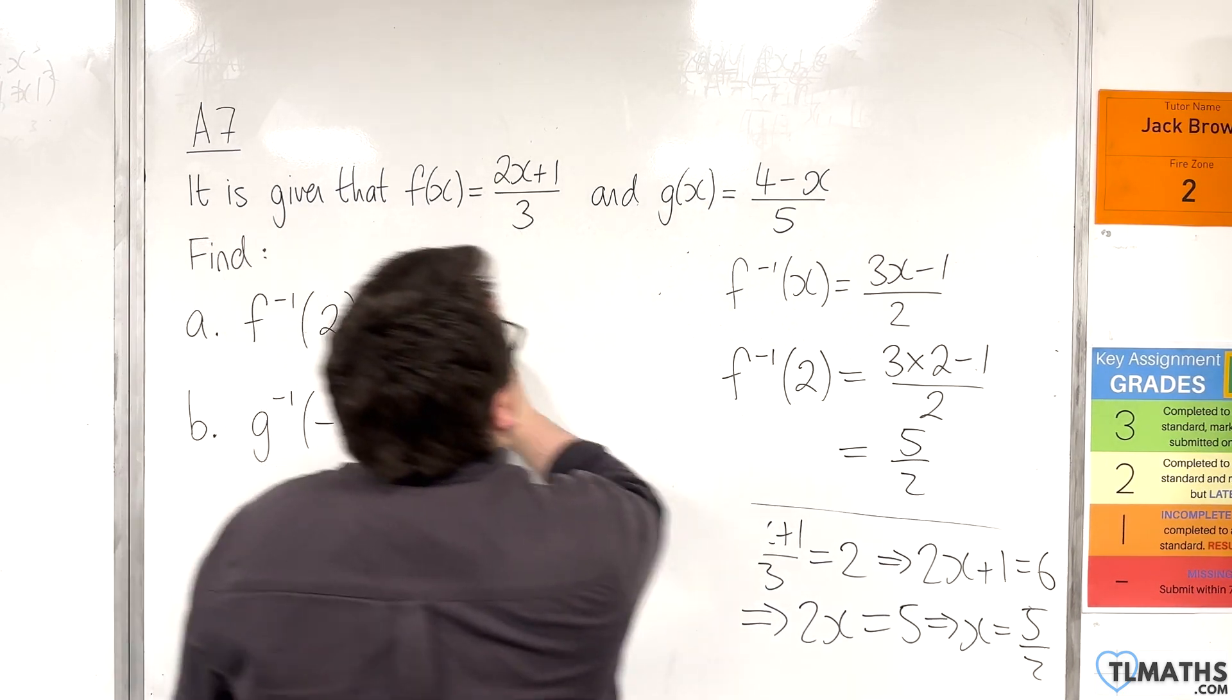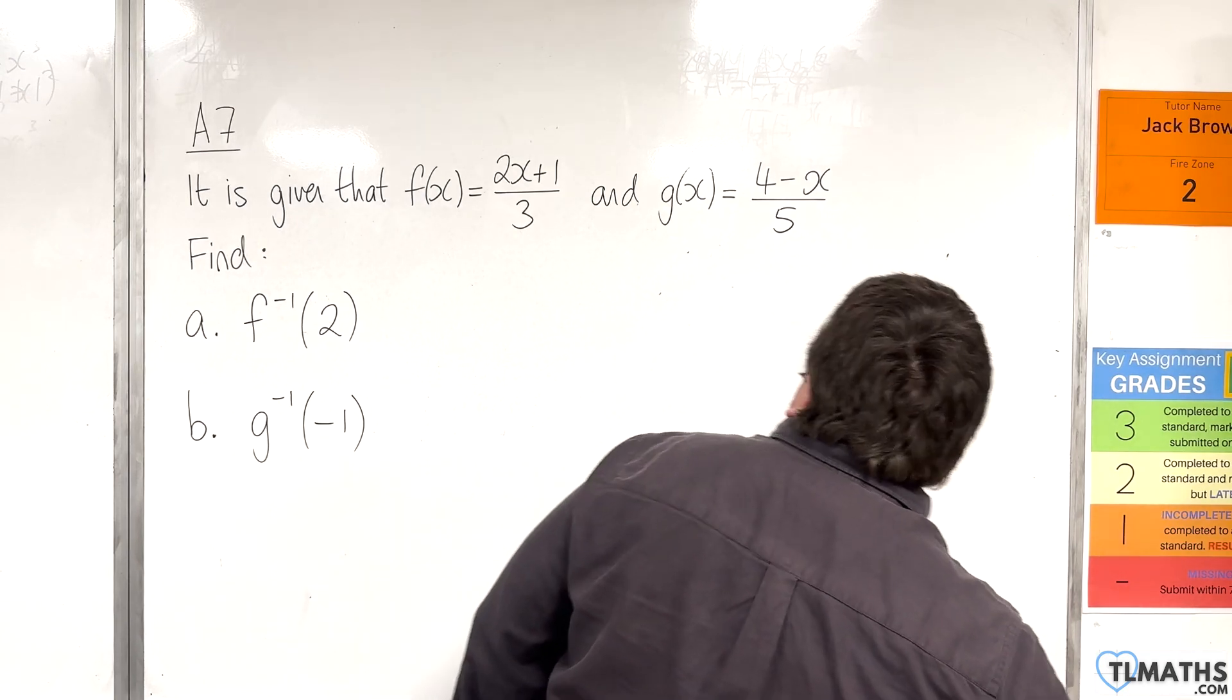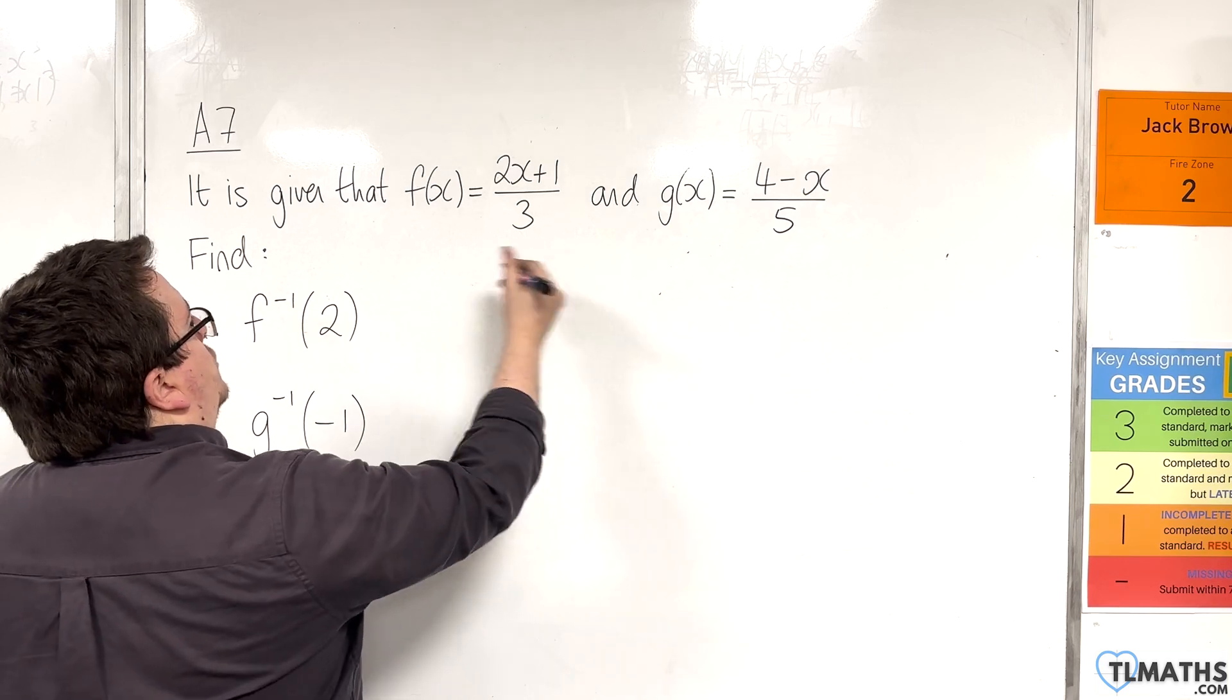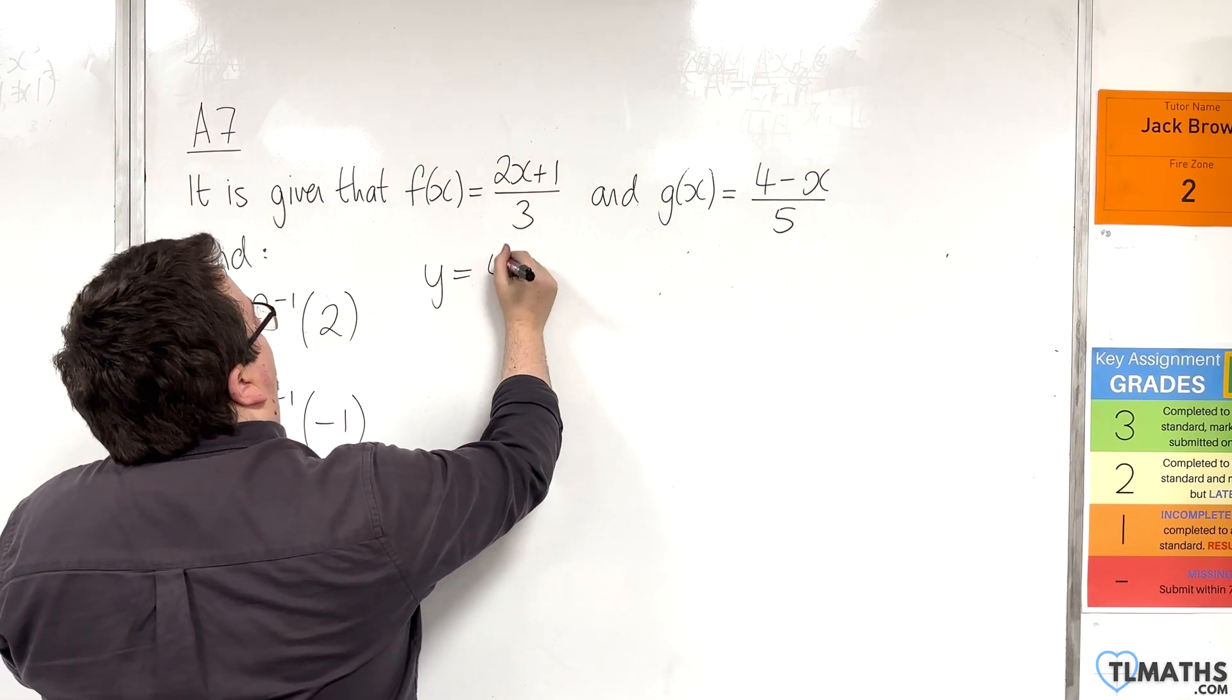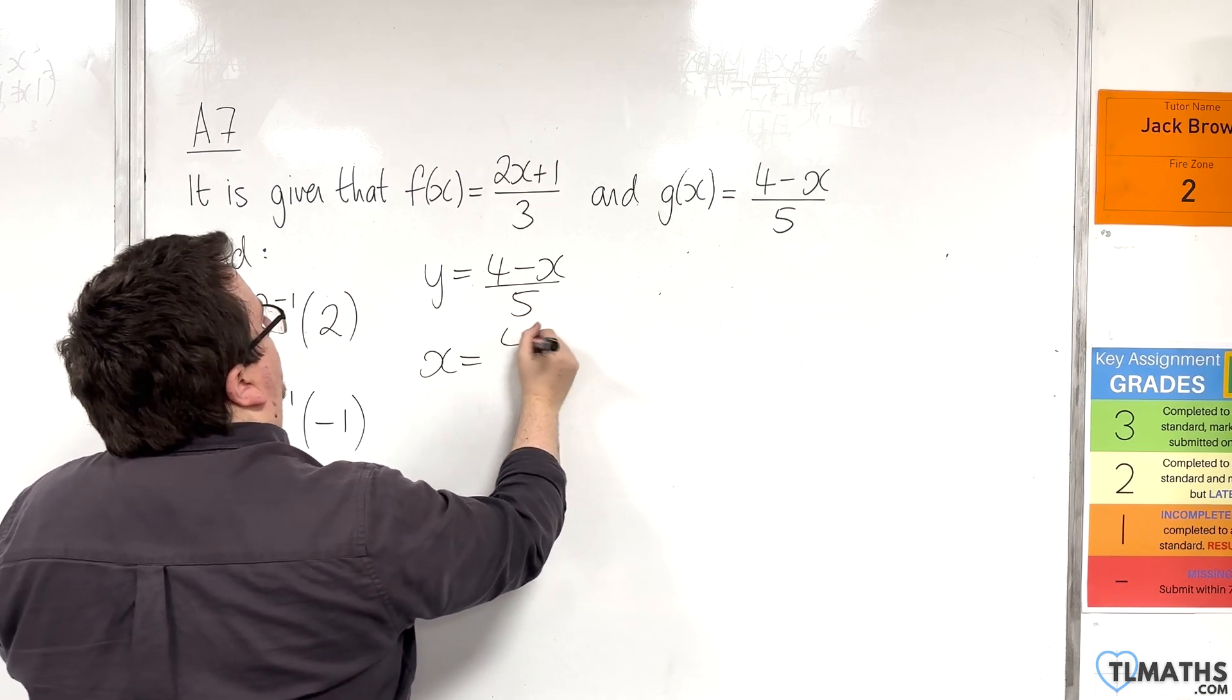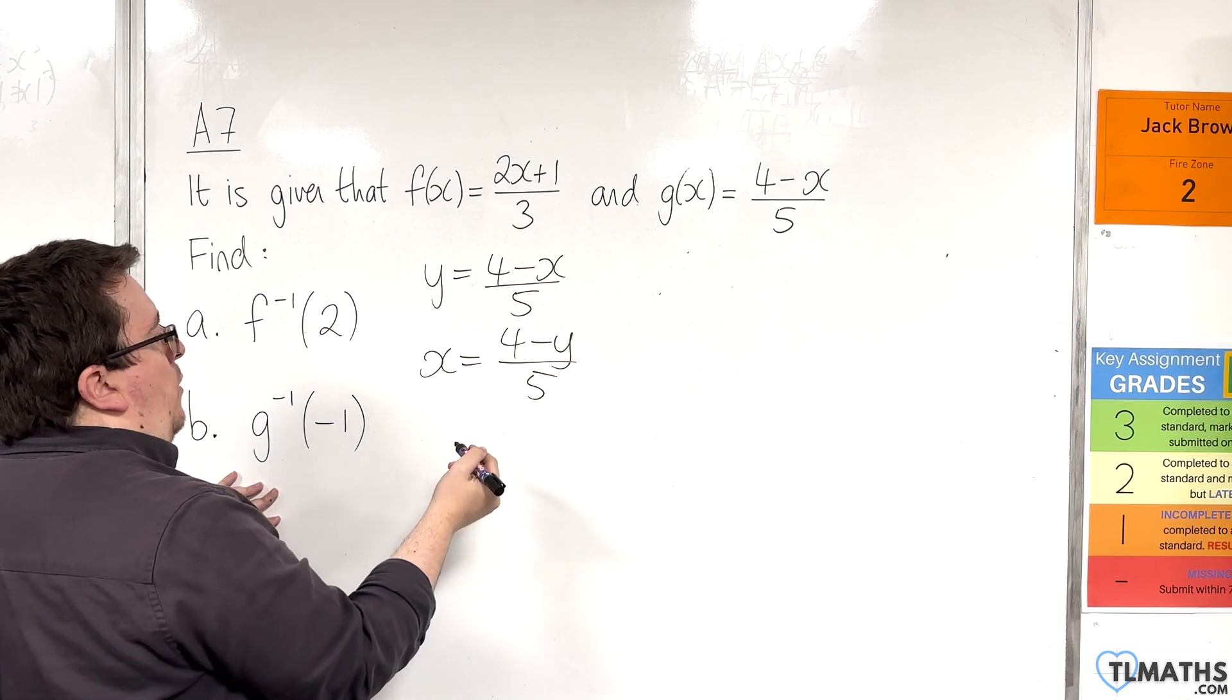And, I'll do it both ways again, just so you can see what's going on. It is a bit weird. So, first of all, find the inverse function. So, y equals 4 take away x over 5 first. Swap the x's and y's.